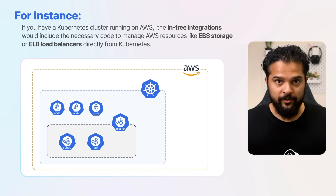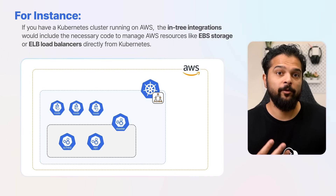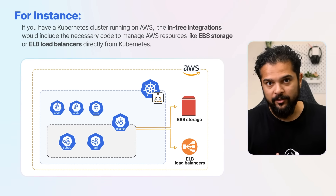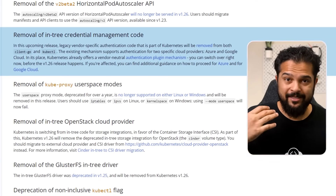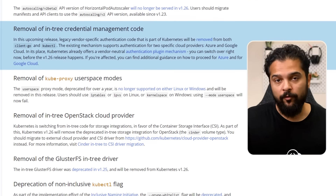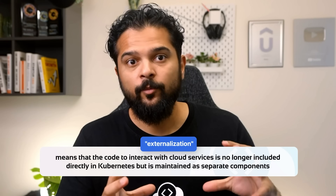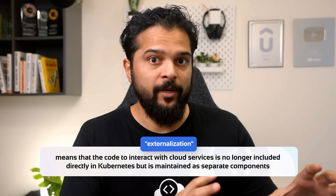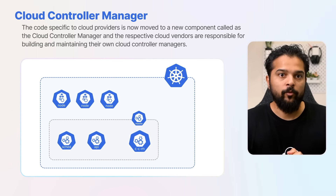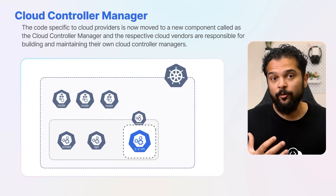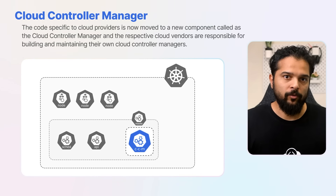For instance, if you have a Kubernetes cluster running on AWS, the in-tree integrations would include the necessary code to manage AWS resources like EBS storage or ELB load balancers directly from Kubernetes. Starting from Kubernetes version 1.26, the project began transitioning these integrations out of the core code base. This process, known as externalization, means that the code to interact with cloud services is no longer included directly in Kubernetes but is maintained as a separate component called the cloud controller manager, and the respective cloud vendors are responsible for building and maintaining their own cloud controller managers.